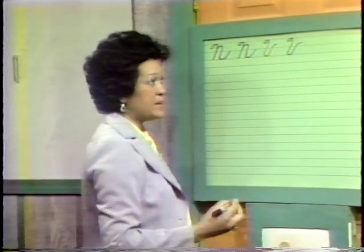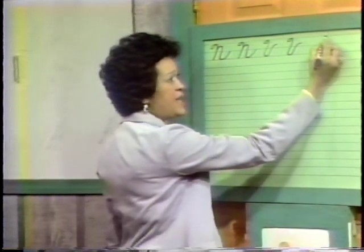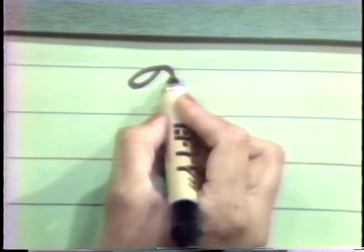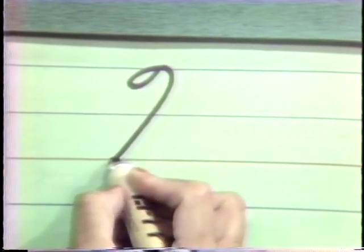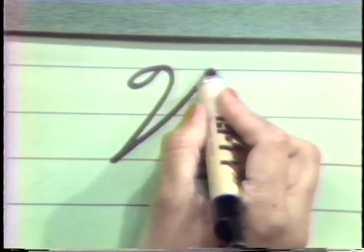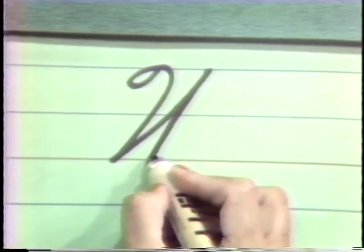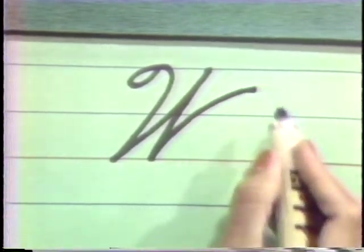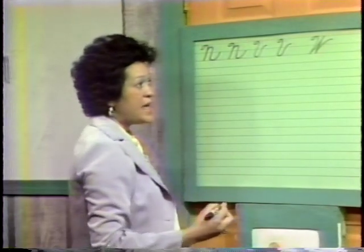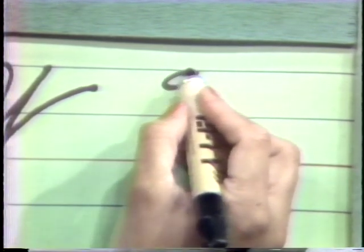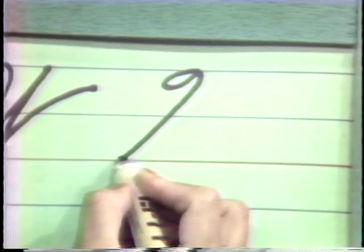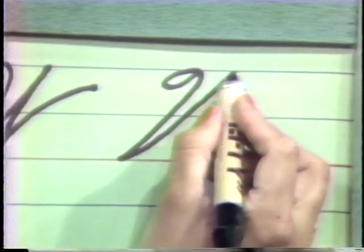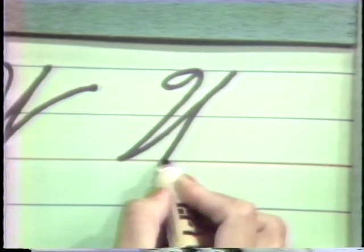The letter W — a slanted vertical loop again. Start at your headline, come all the way down to your baseline, go all the way up to your headline, come back down retracing slightly, go up and stop almost to your headline but not quite. Start at your headline with a slanted vertical loop, come all the way down to your baseline, curve up, come all the way down and you're going to swing out some for the letter W.